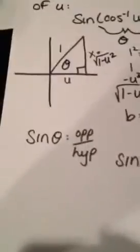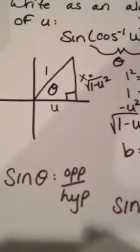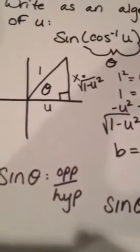Now you want to find sine of theta. Sine of theta is opposite over hypotenuse. The opposite is square root of 1, or radical, square root of 1 minus u squared.